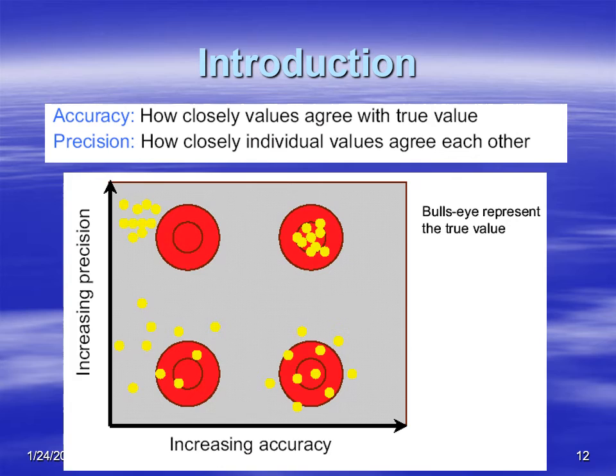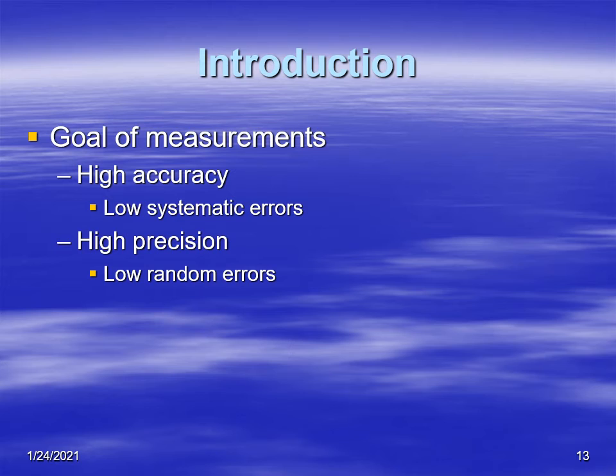This picture we just looked at, very similar, shows accuracy and also precision. I think this picture is from your book. So the goal of our measurements is to have high accuracy—high accuracy means low systematic errors—and high precision, which means low random errors. So we'll be close to the center and all of our measurements will be next to each other in the center of the target.